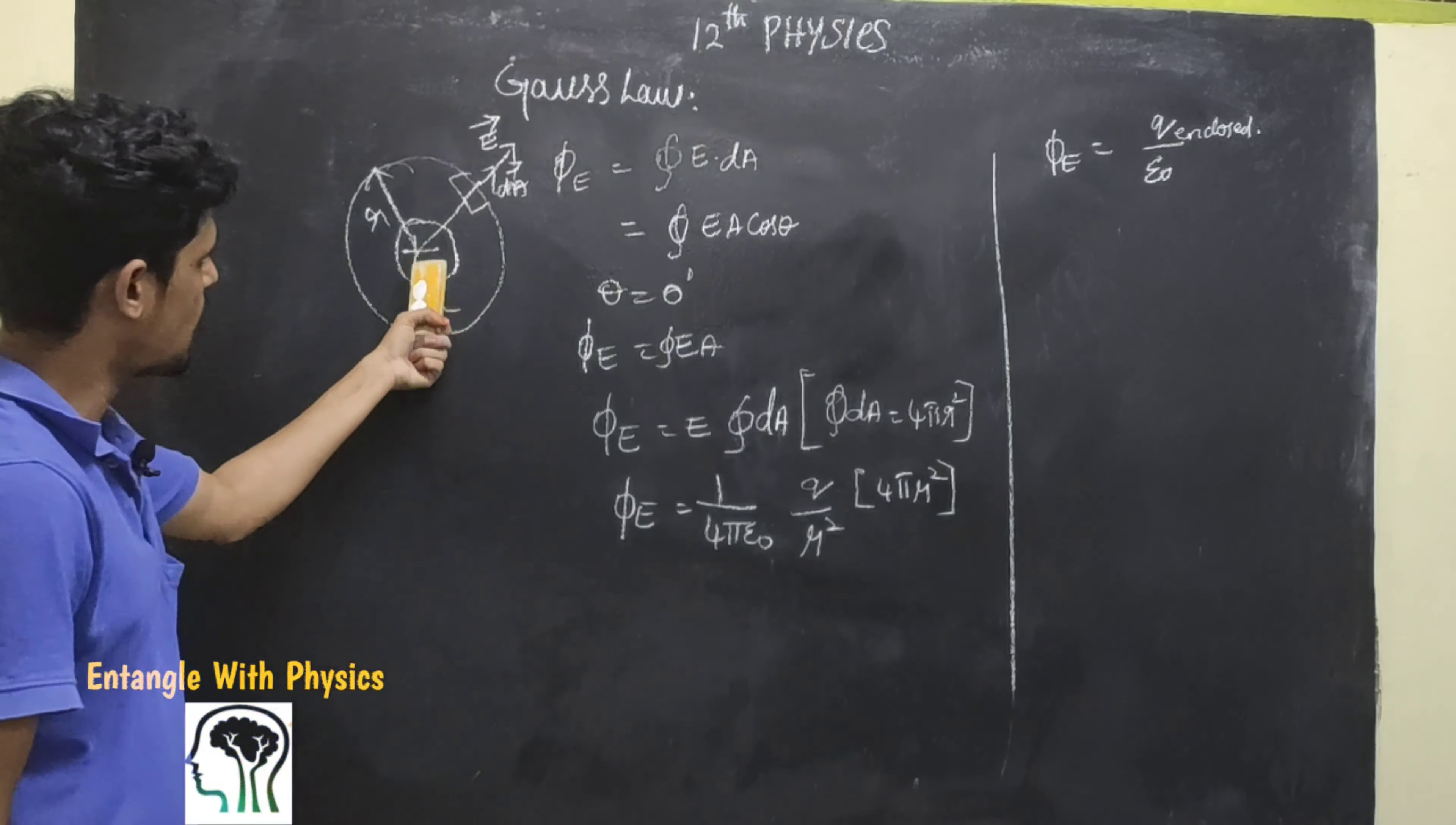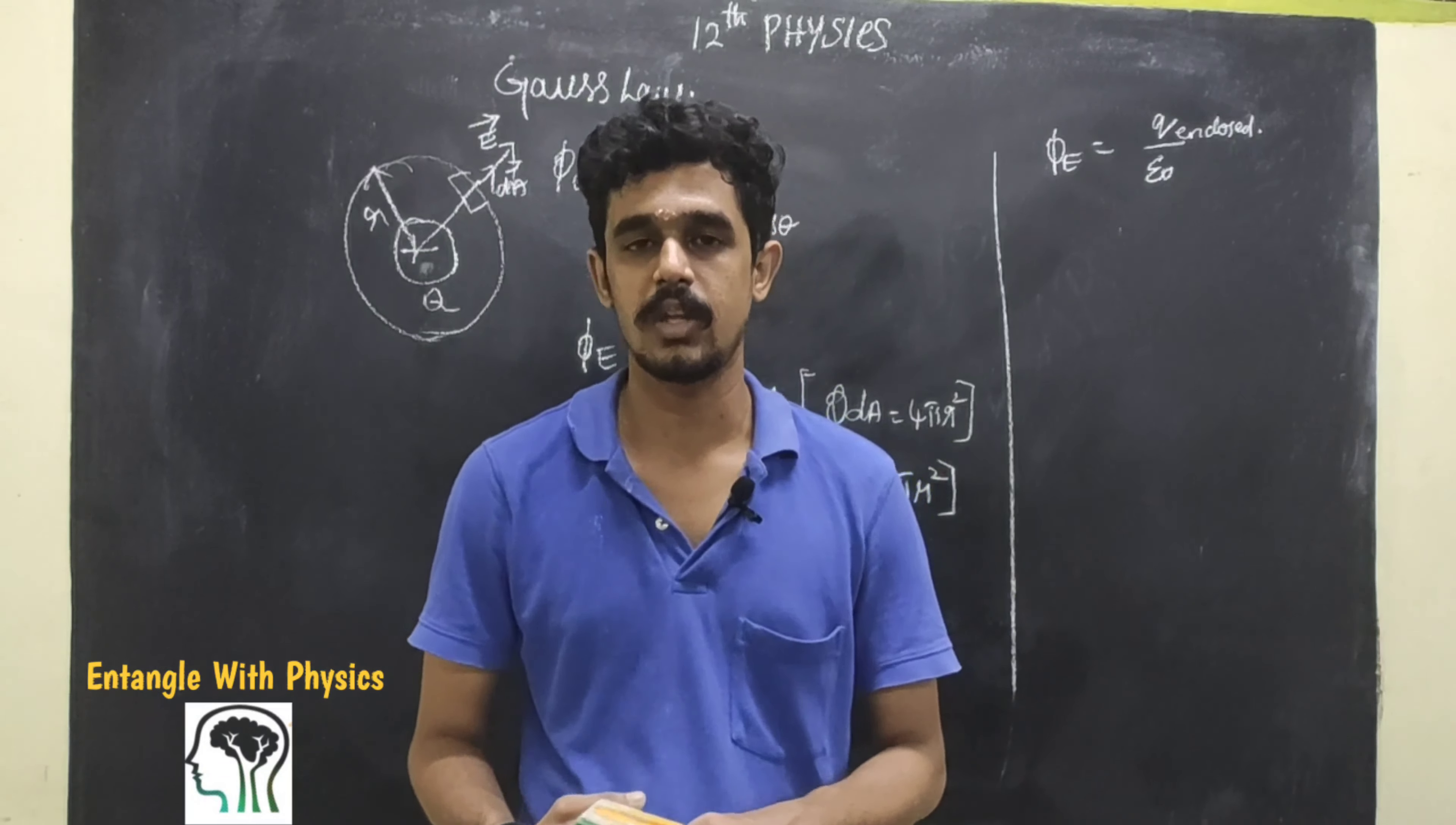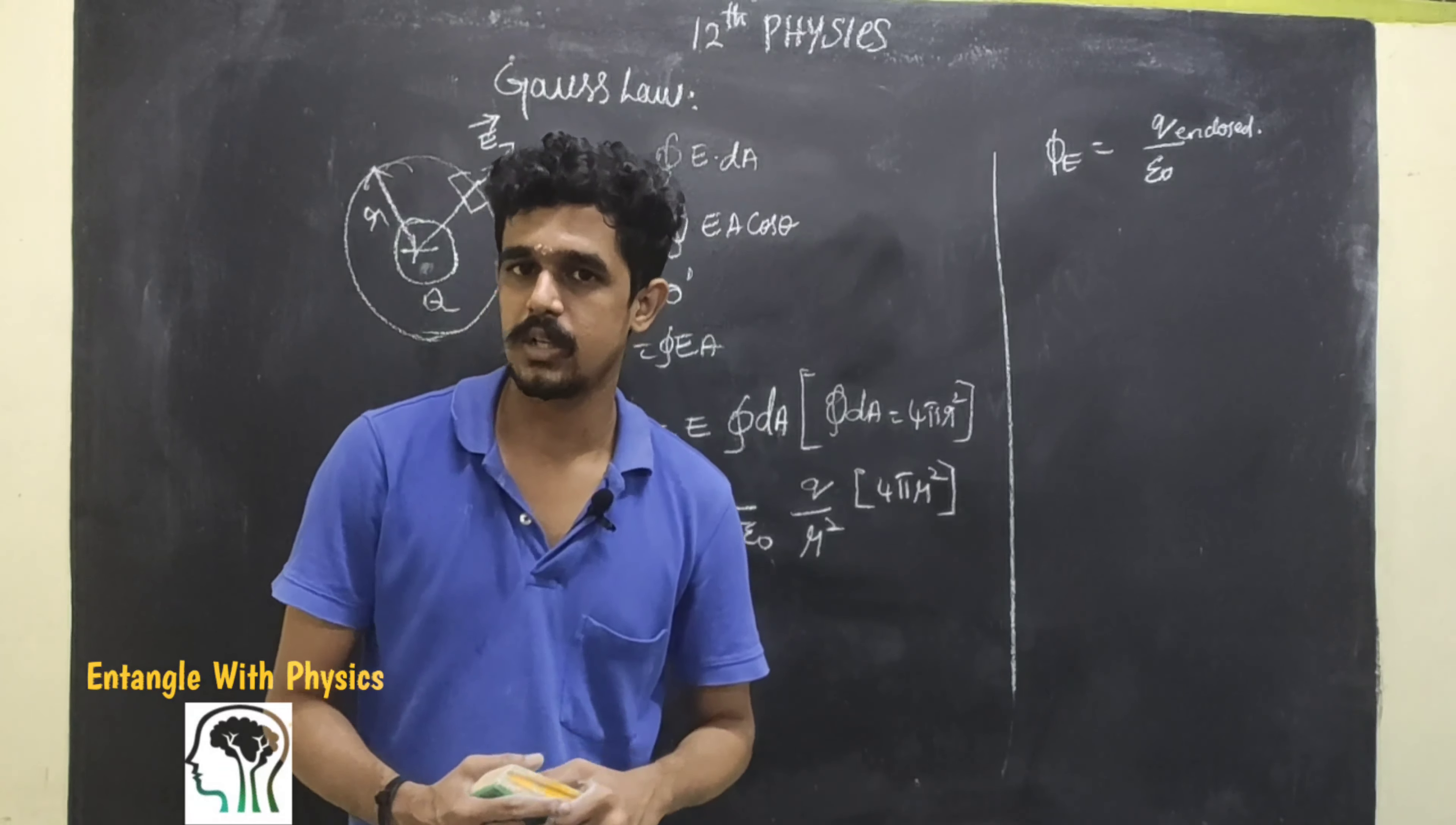We are going to choose an imaginary surface, a Gaussian surface. The imaginary surface is a Gaussian surface. So, we'll consider a spherical surface.